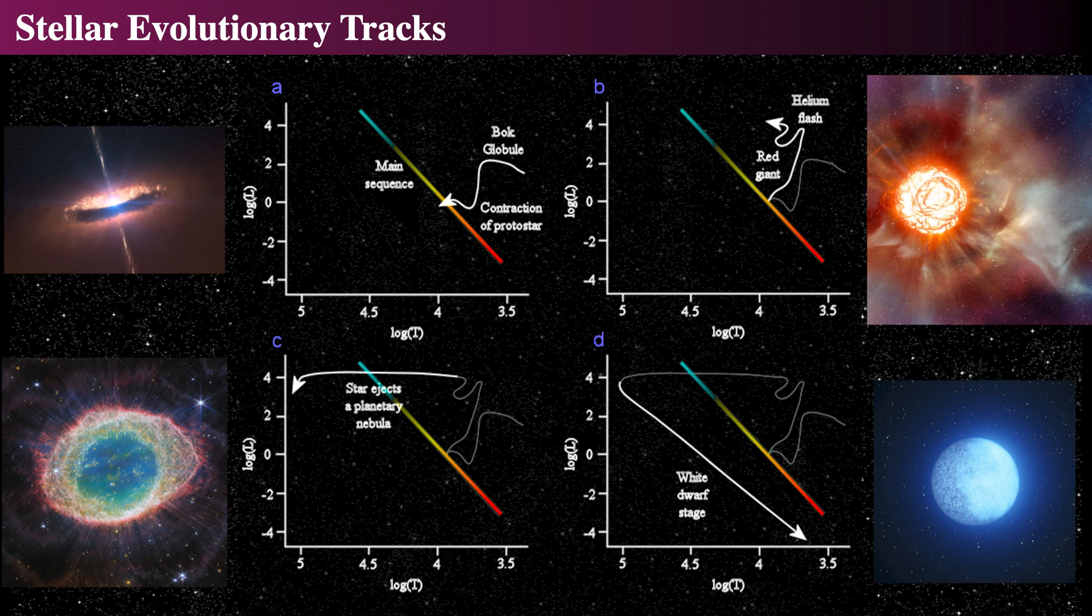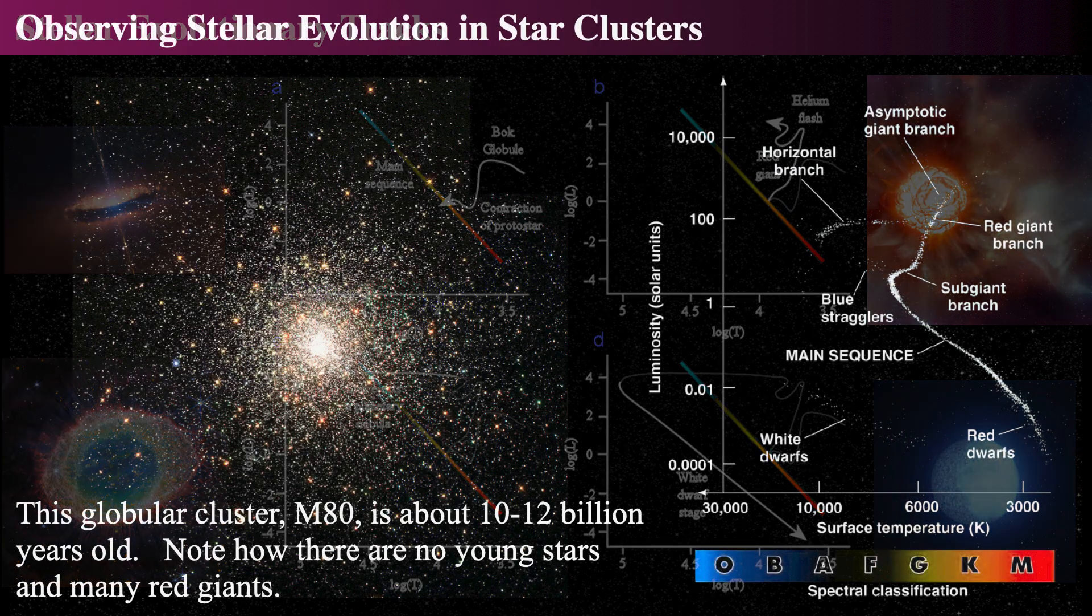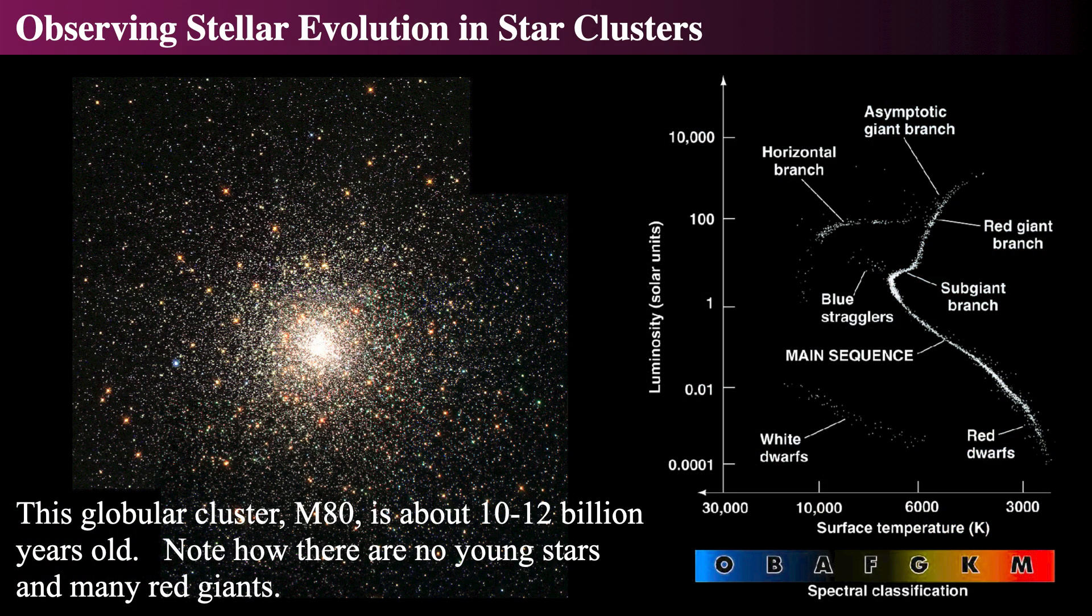The exact tracks of each star will be different, based on their masses and compositions, which can be changed by close proximity to another star. Therefore, every star follows its own evolutionary track over its lifespan. A cluster HR diagram is the composition of all the stars at different points on their tracks.